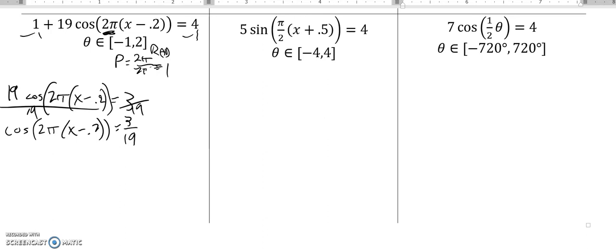Now I'm going to take notice it's cosine of something, cosine of this equals that, so let me take inverse cosine of that. Arc cosine of 3/19, do that in my calculator, about 1.412.